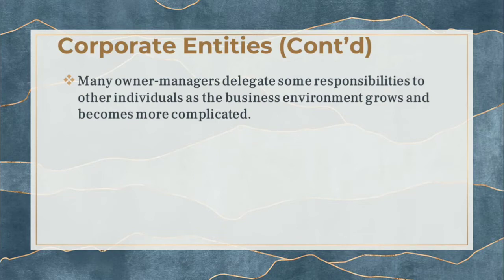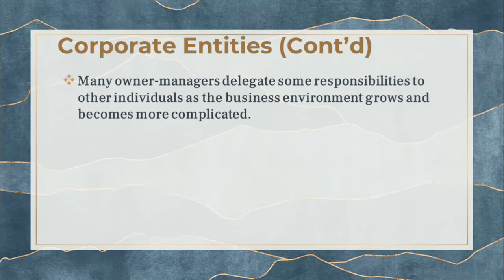An example of a corporate entity is San Miguel Corporation, owned by Danding Cojuangco. As the business environment grows and becomes more complicated, many owner-managers delegate responsibilities to other individuals. Danding could no longer handle everything alone at San Miguel Corporation, so he hired someone — now known as Ramon Ang.